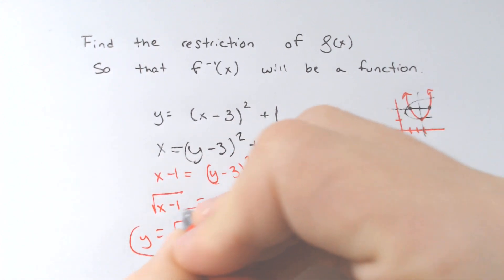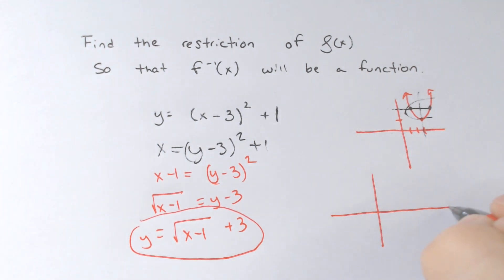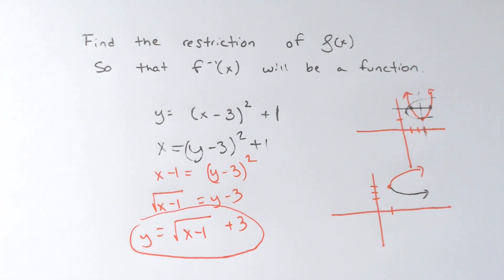Now that is the inverse. If you were to graph that inverse, it would be to the right by 1 and up by 3, like I said. And if you were to do the positive and the negative version, you would fail the vertical line test.